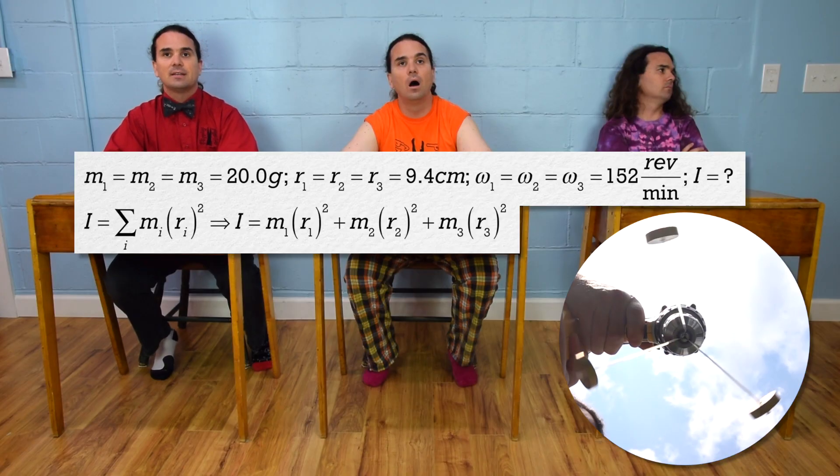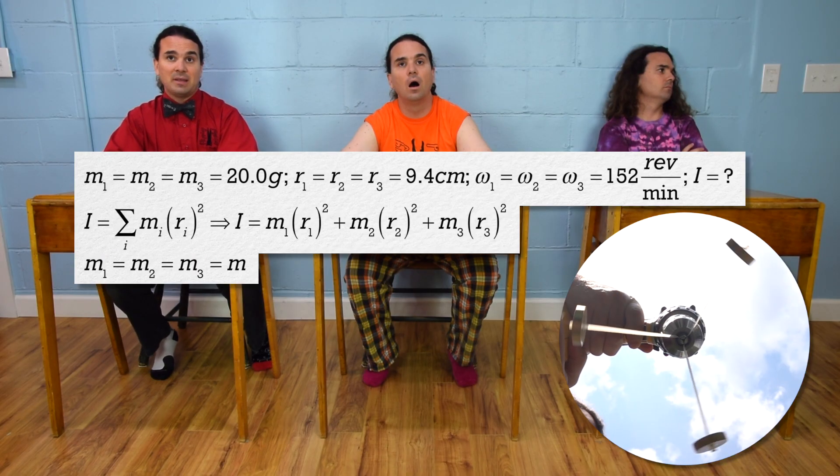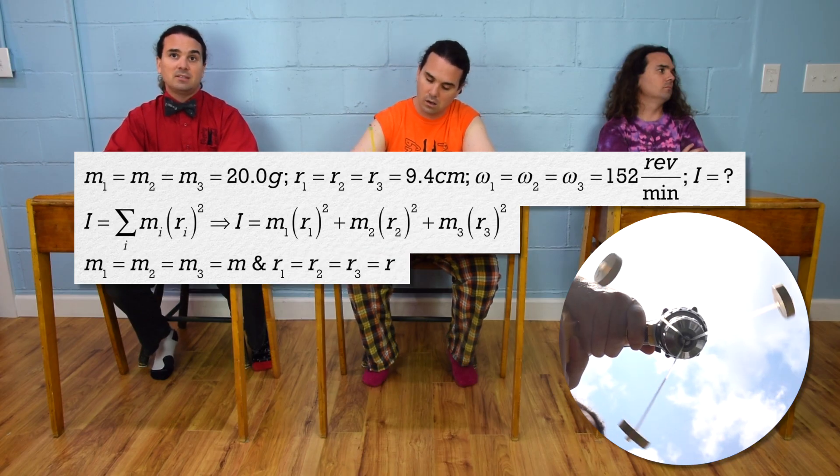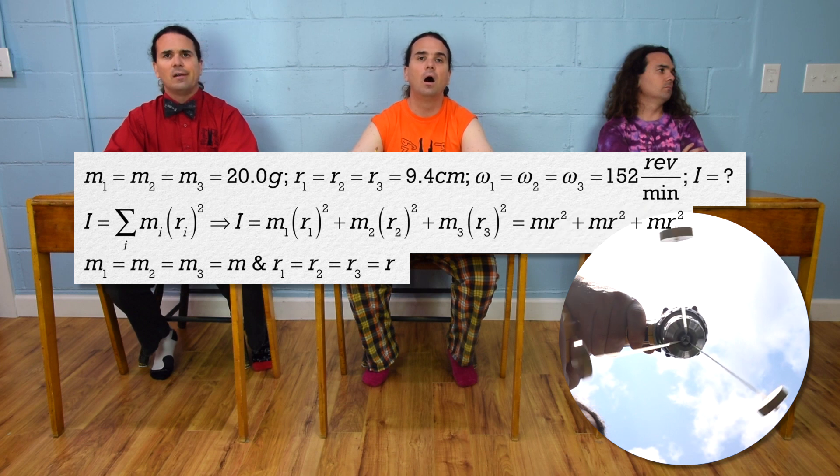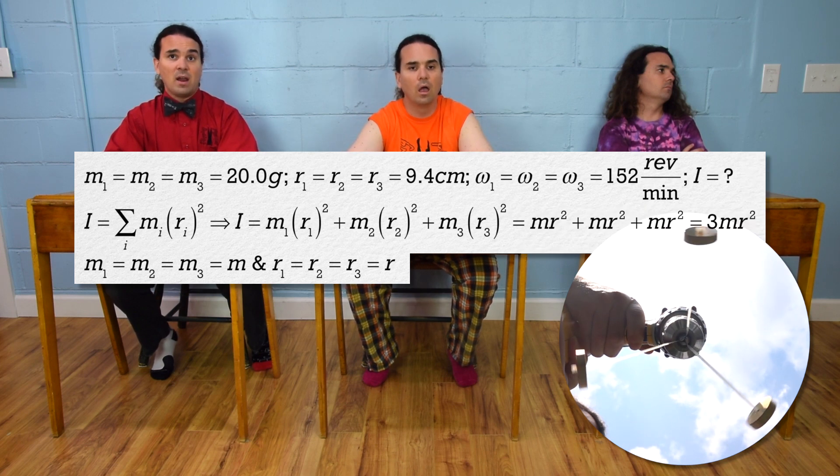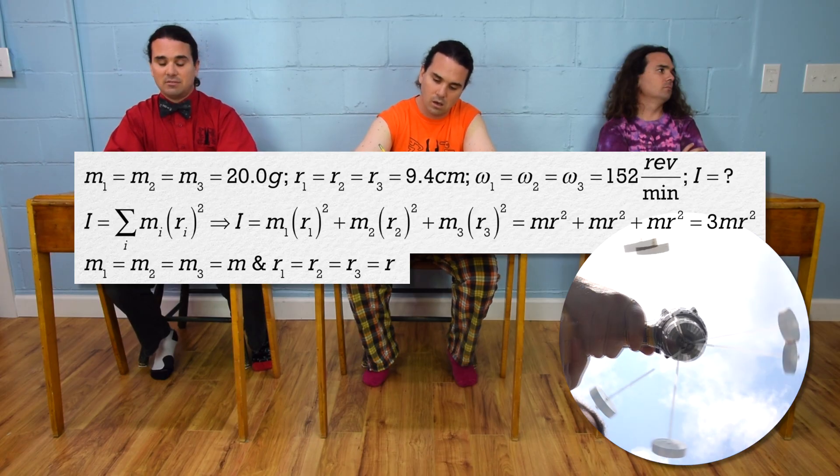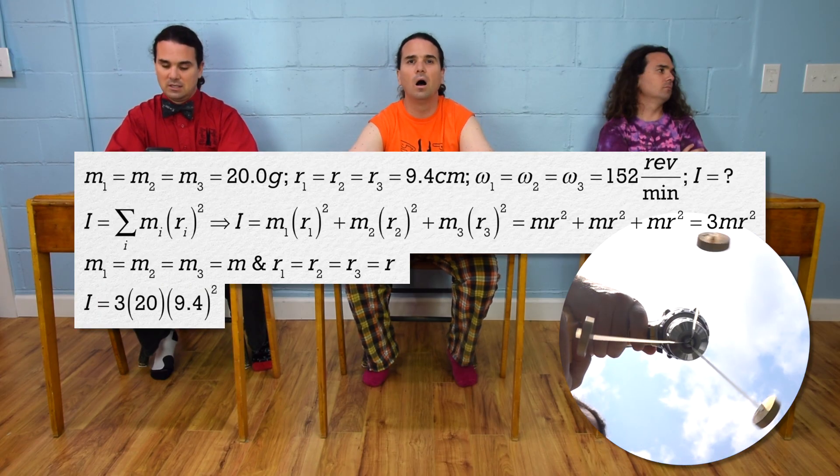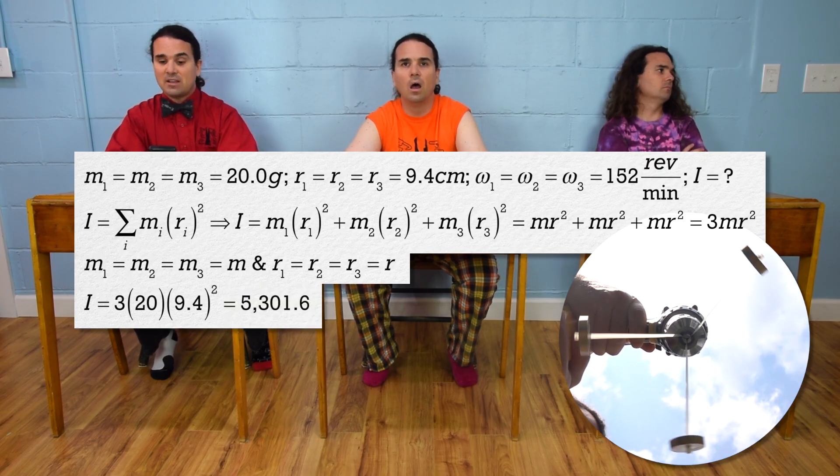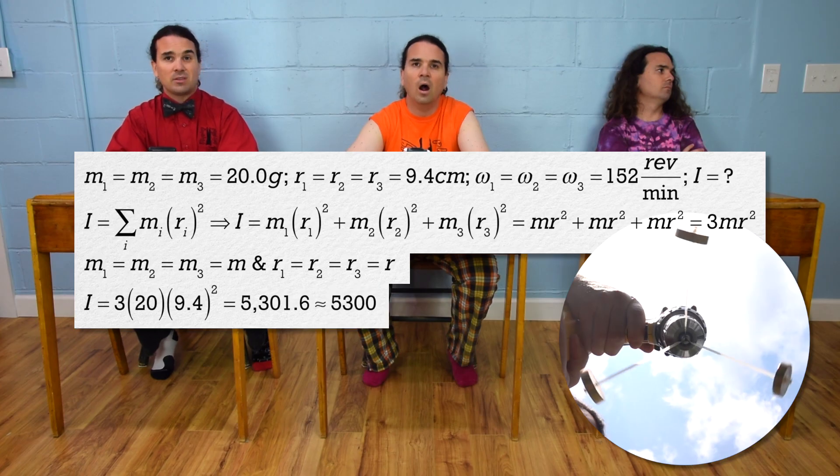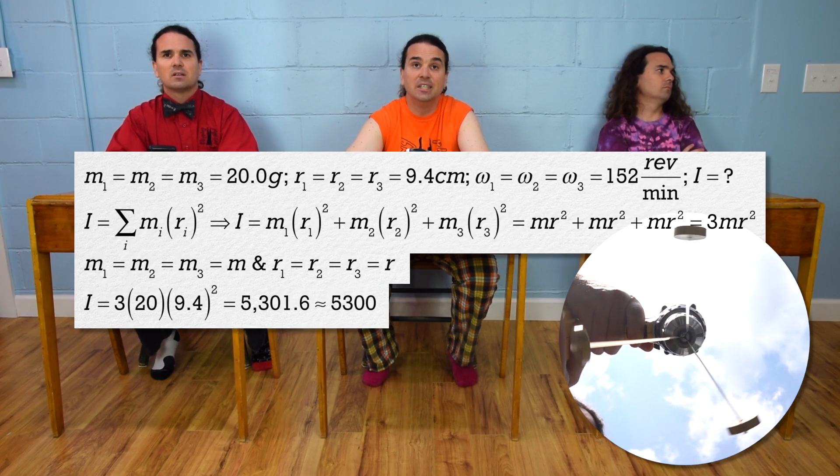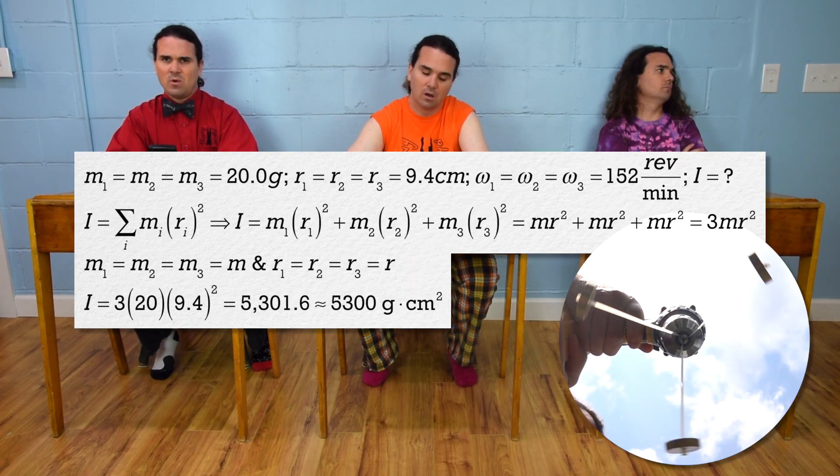Oh yeah, that makes sense. Okay, so all the masses are the same, so we can replace each mass with m. All the r's are the same, so we can replace each distance from the axis of rotation with r. That means the moment of inertia equals three times mr squared. Substituting in numbers gives us three times 20 times 9.4 squared, which is 5,301.6 or 5,300 with two significant digits. And the units are grams times centimeters squared. That's kind of weird.